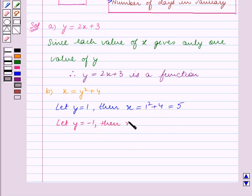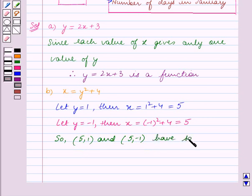x equals minus 1 squared plus 4, which is again equal to 5. So for two different values of y we get the same value of x. The ordered pairs (5, 1) and (5, -1) have the same first component.